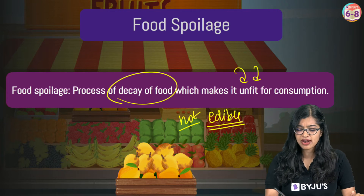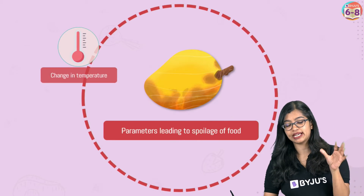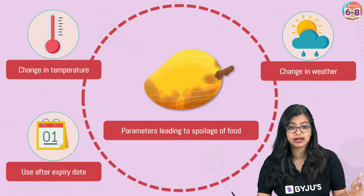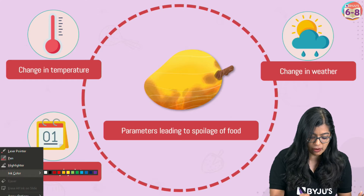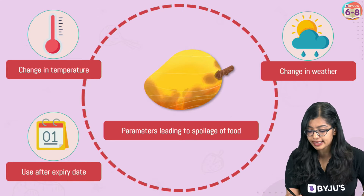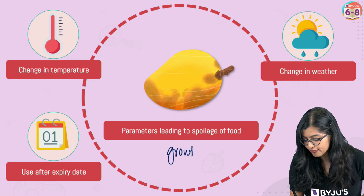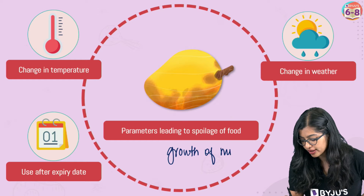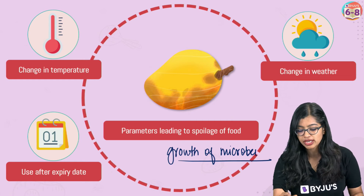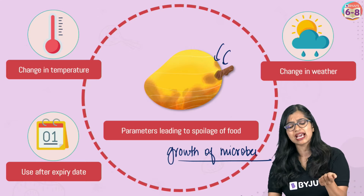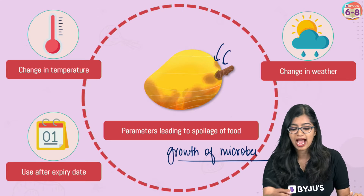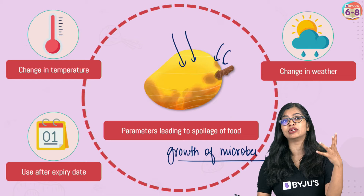Various reasons as to why food gets spoiled include change in temperature, change in the weather, and using it after the expiry date. All of these things facilitate the growth of microbes on it. And when the microbes start to grow, it changes the color, there's a change in texture, and we also see a change in smell, and then the food is no longer edible.